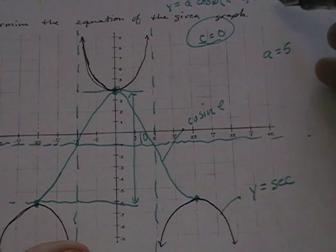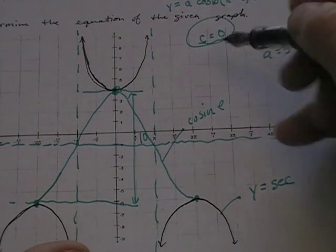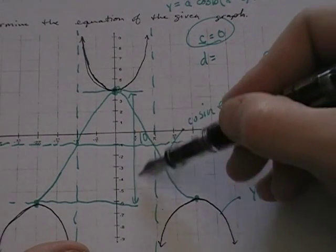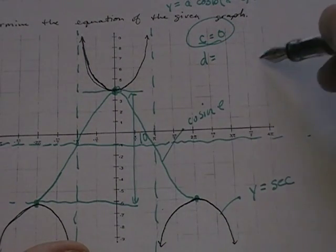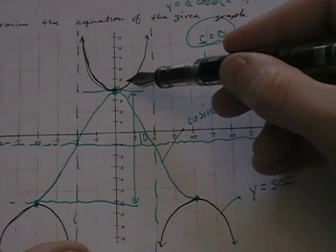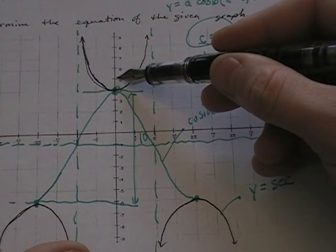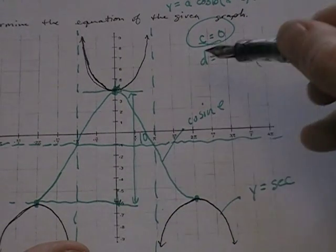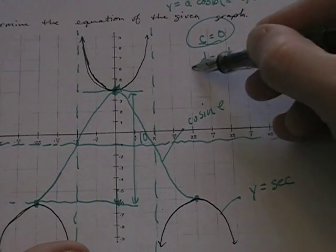So c is 0. d, pretty easy, it's got a peak of 4 and a valley of negative 6. a is 5, so that means it should have a peak of 5, it's been moved down 1. It should have a valley of negative 5, it's been moved down 1, so d is minus 1.